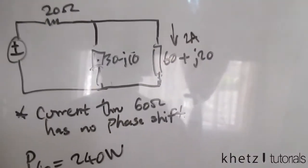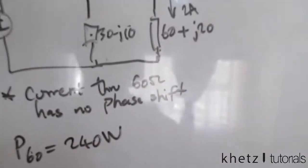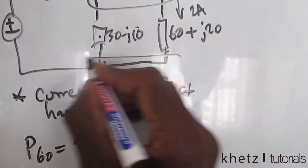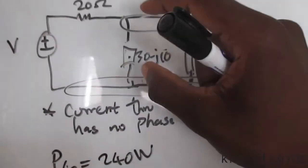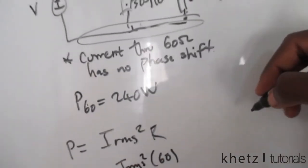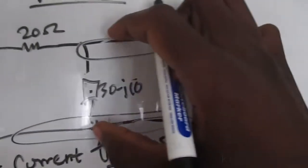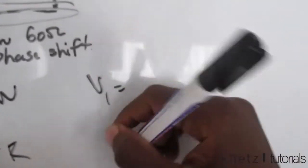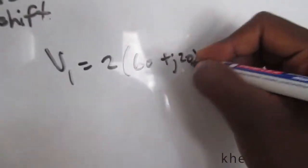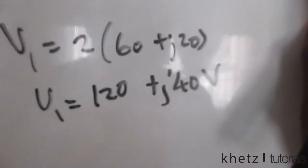Now that we have those impedances and we know that the current flowing through the lower branch is 2 amperes, we can find the voltage. Combining that section — these two are in parallel, so the voltage across both is the same. Let's call it V1, the voltage across the parallel combination. V1 equals 2 multiplied by the impedance along that path, which is 60 plus j20, giving V1 equals 120 plus j40 volts.